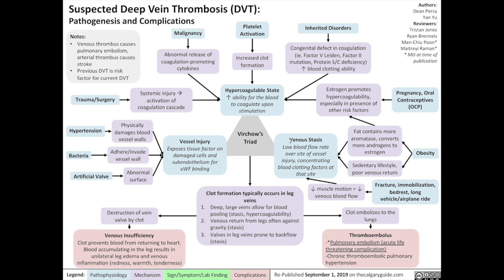The last factor in Virchow's Triad is venous stasis, which reflects a low rate of blood flow over the site of vessel injury, concentrating blood clotting factors at that site.